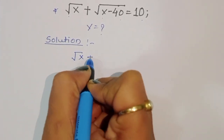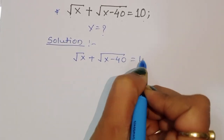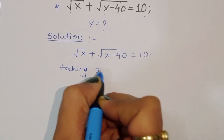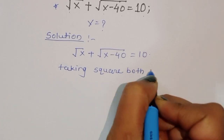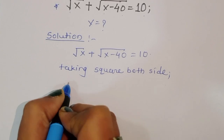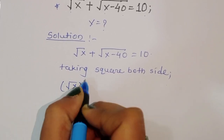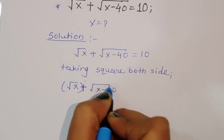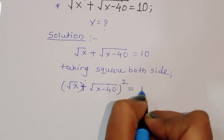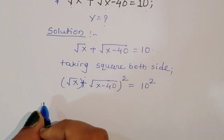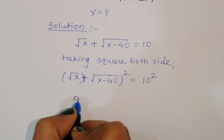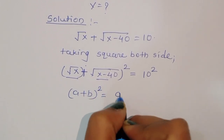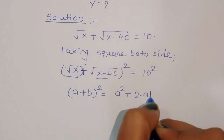Square root of x plus square root of x minus 40 is equal to 10. Now, taking square of both sides, we will get square root of x plus square root of x minus 40, whole squared, is equal to 10 squared. We know the formula: a plus b whole square is equal to a square plus 2ab plus b square. Here, a is square root of x and b is square root of x minus 40.